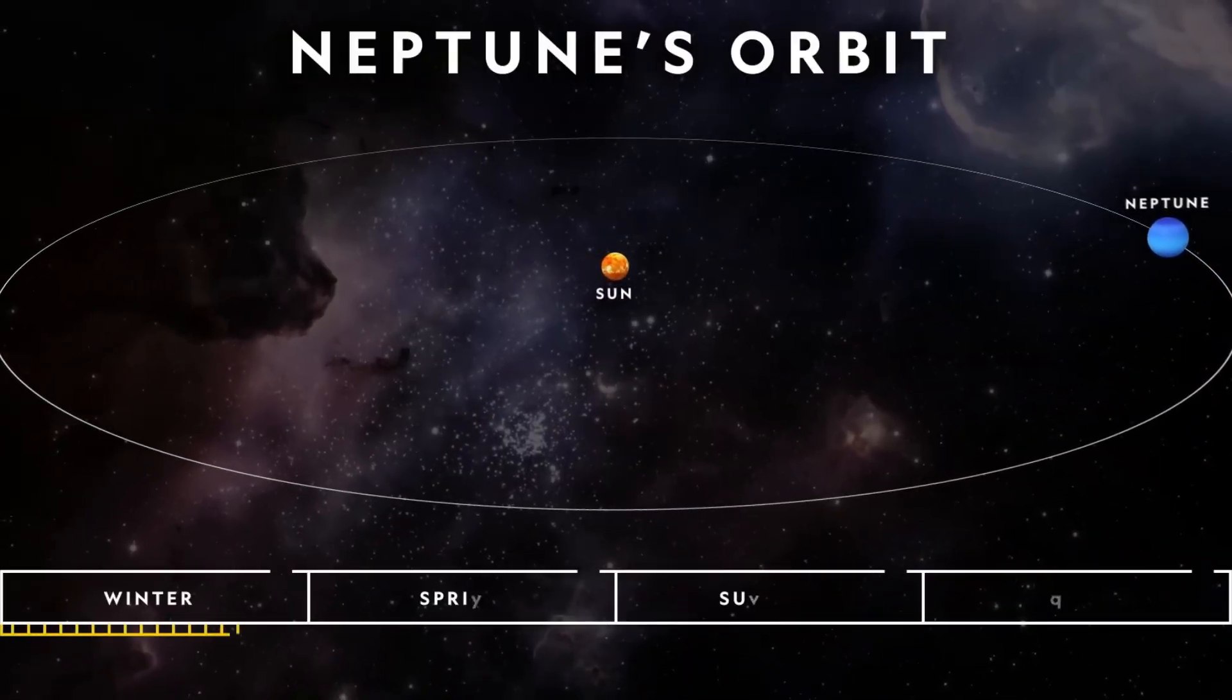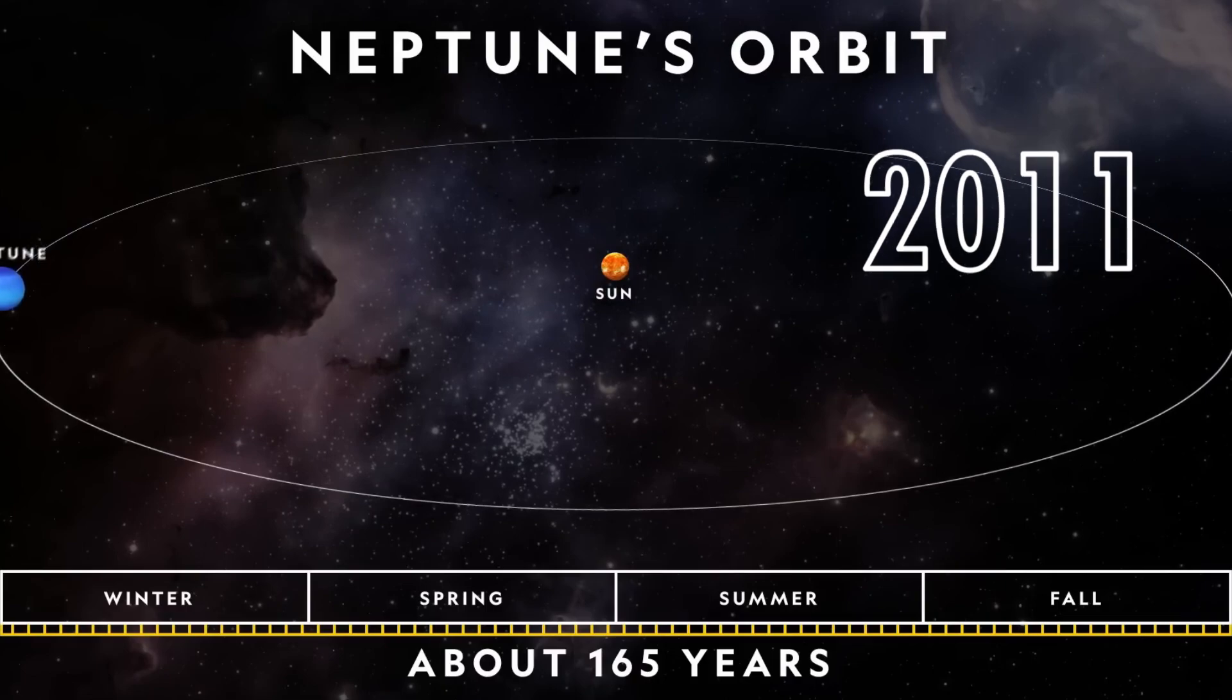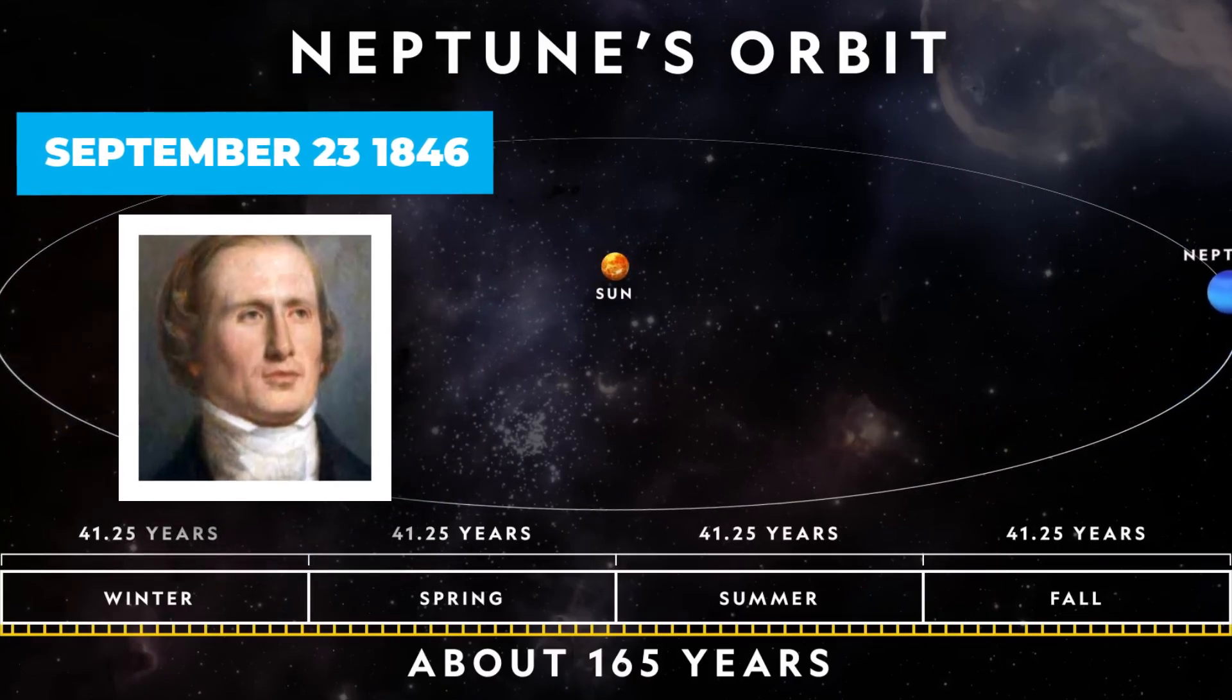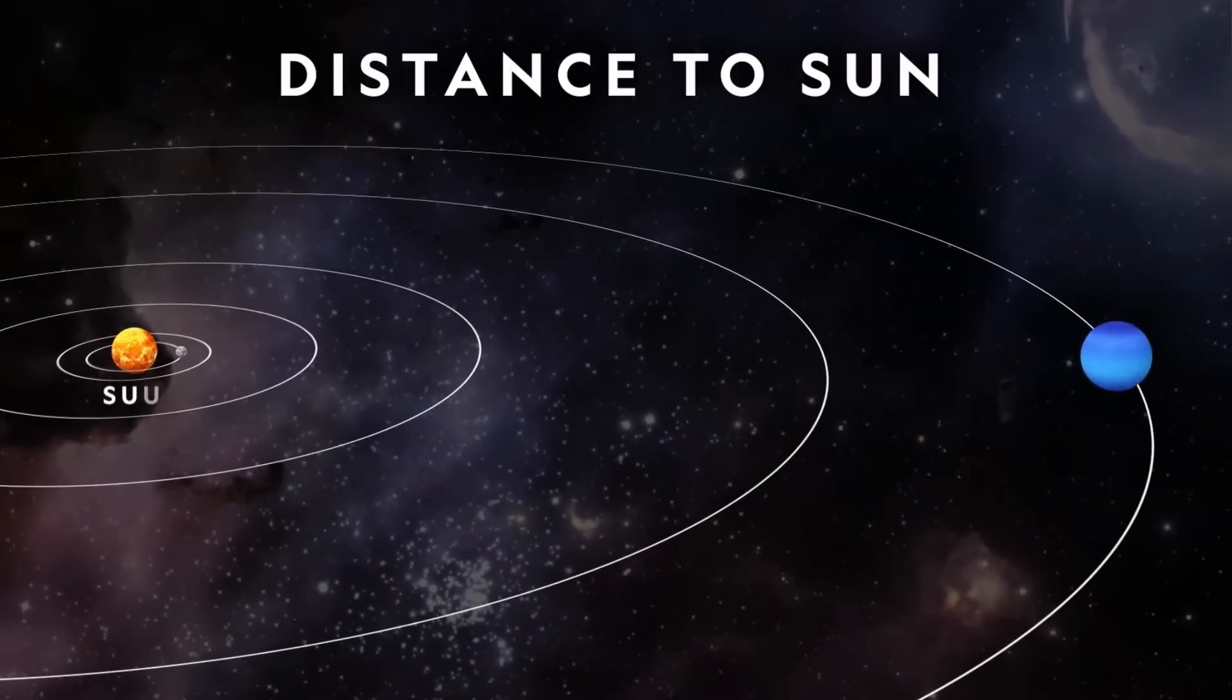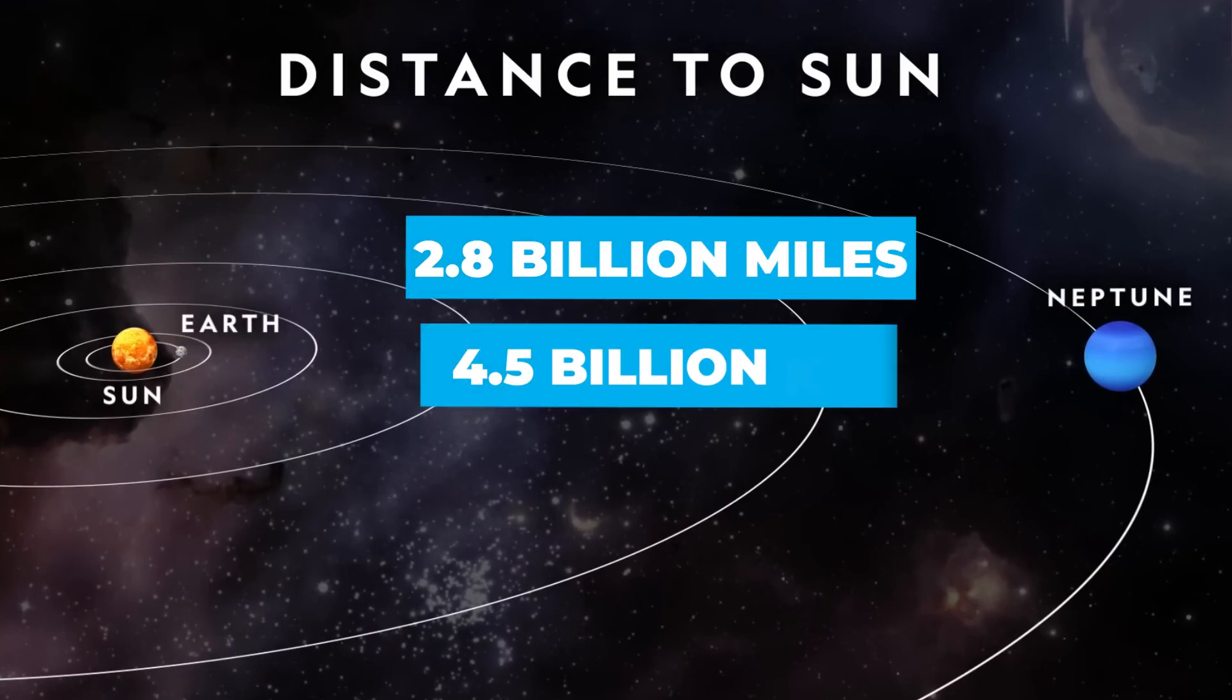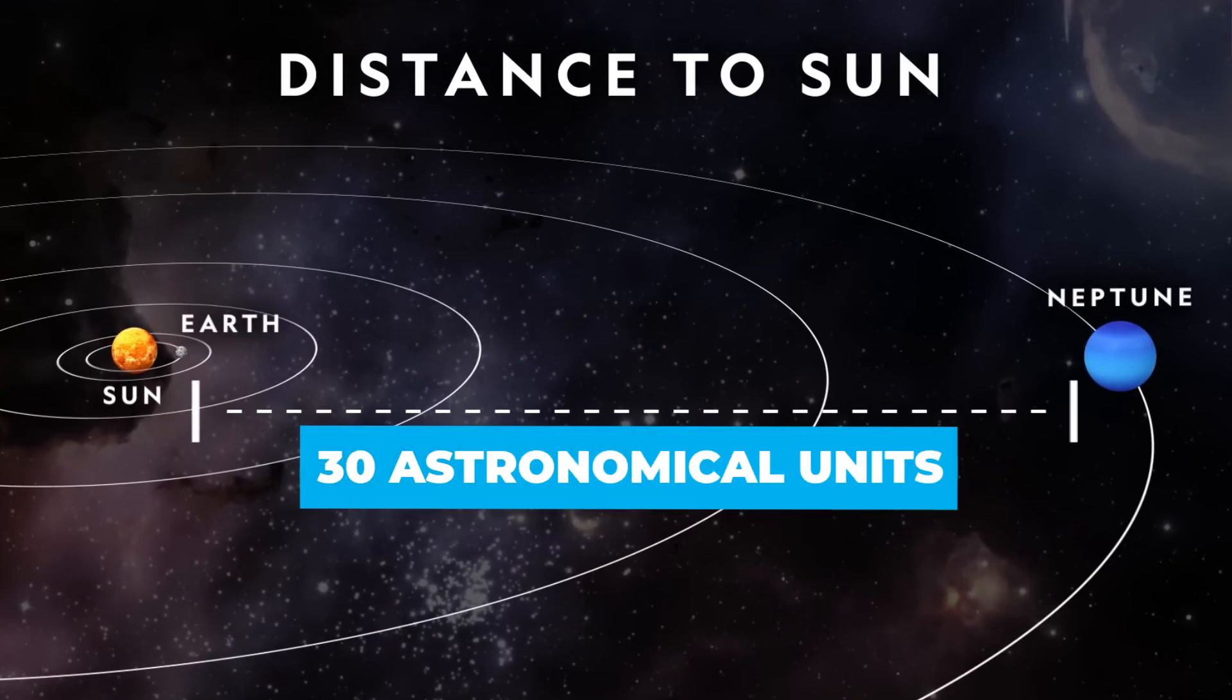Fun fact, it completed its first 165-year orbit in 2011, when Verrier discovered it on September 23, 1846. This ice giant is the eighth planet from the Sun. Situated an average of 2.8 billion miles, or 4.5 billion kilometers from the Sun, Neptune is 30 astronomical units away.